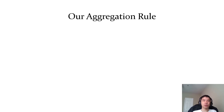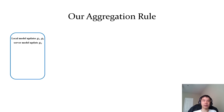Next, we use an example to illustrate our aggregation rule. In this example, we assume there are two clients whose local model updates are g1 and g2, and the server model update is g0. This graph shows the model updates as vectors.